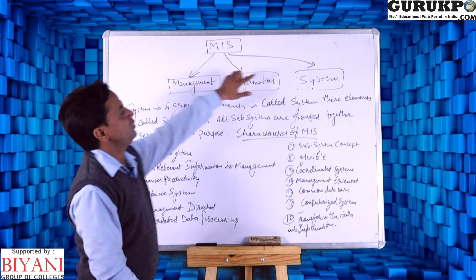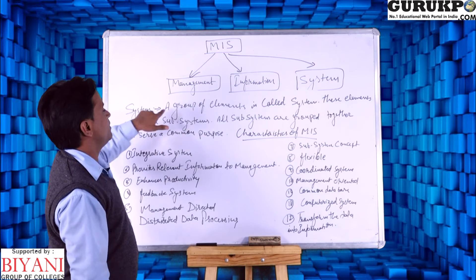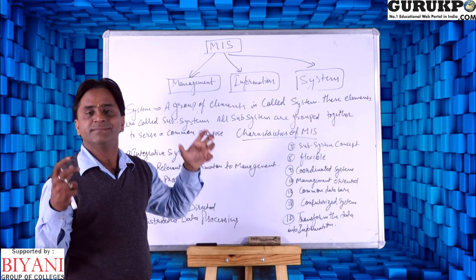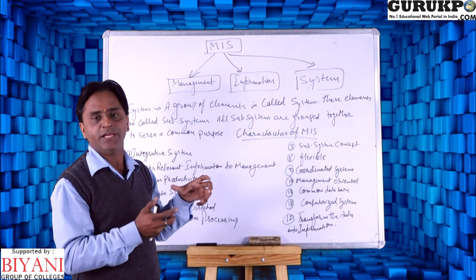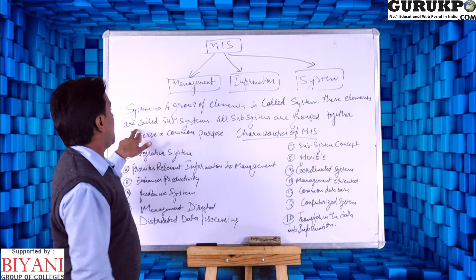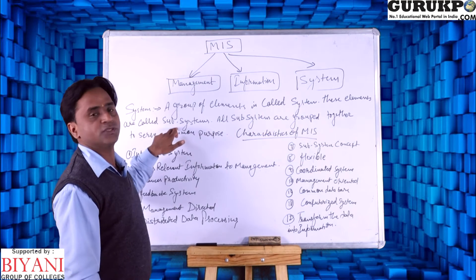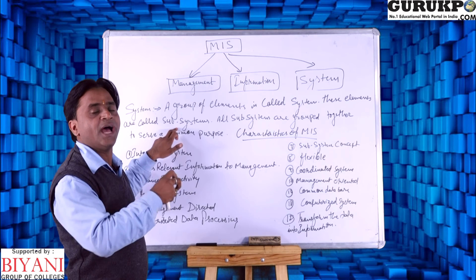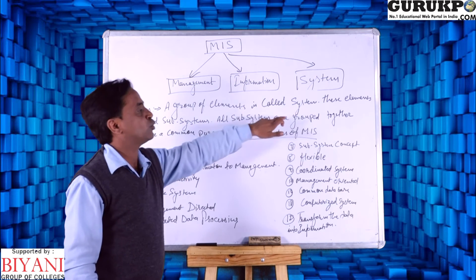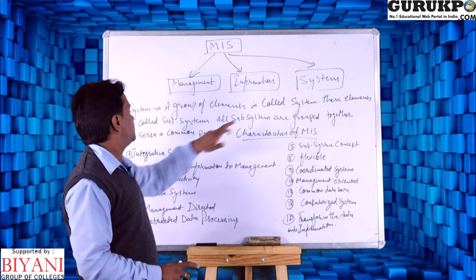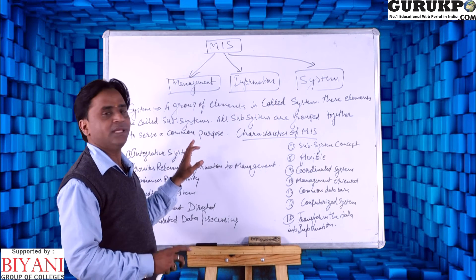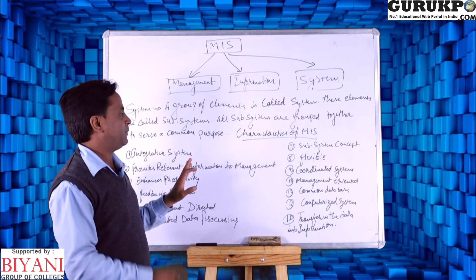After this, we will discuss about system. A group of elements is known as a system — we collect different kinds of elements and call it a system. These elements are called subsystems. All subsystems are grouped together to serve a common purpose.